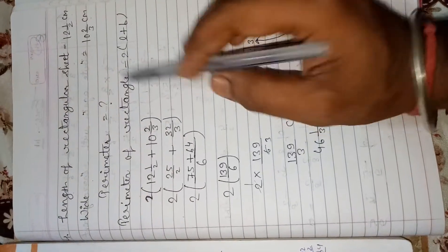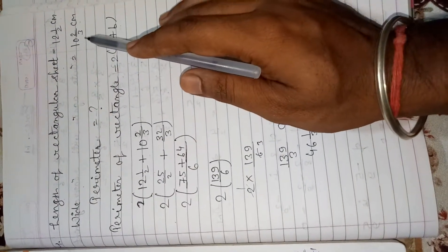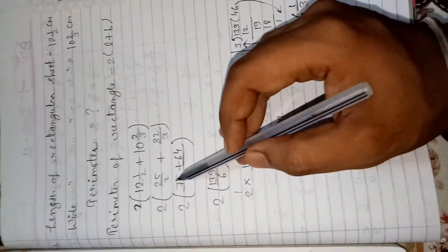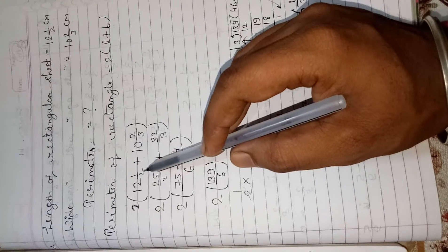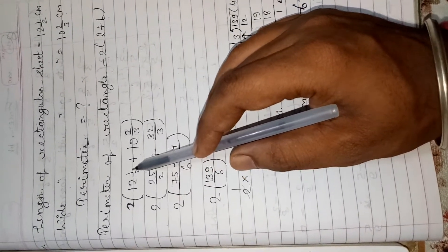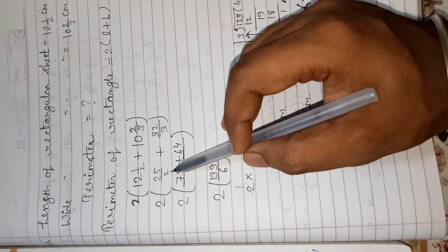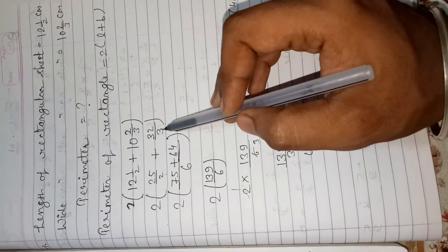2 times, value of L is 12 and 1 by 2, plus value of B breadth is 10 and 2 by 3 cm. So 2 outside. First, change the mixed fraction into improper simple fraction. 12 times 2 is 24, 24 plus 1, 25 upon 2. Plus 3 times 10 is 30, 30 plus 2, 32 upon 3.